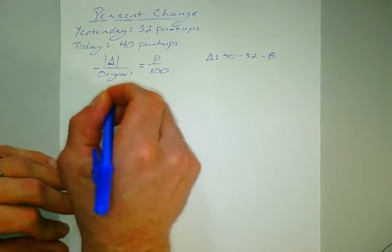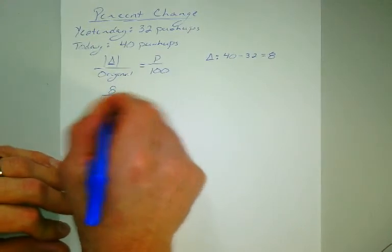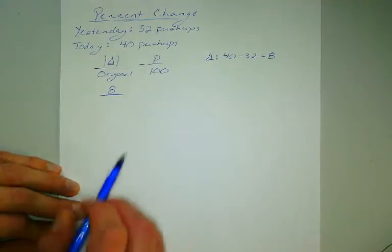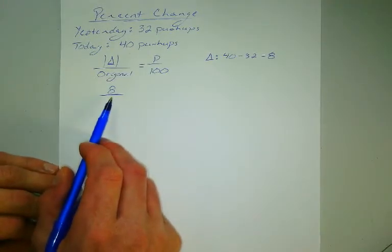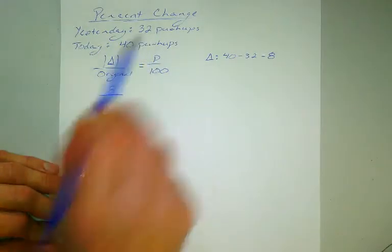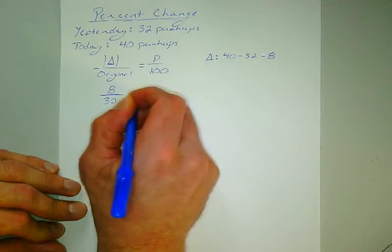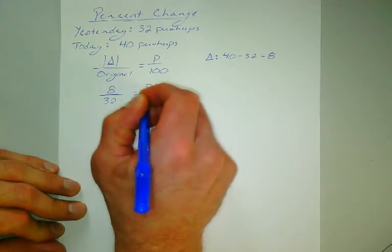So we're going to do 8 all over the original. Now this tripped some of you guys up the last couple weeks. The original is the initial value that I started with, which would be yesterday's push-ups. So I have 8 over 32 equals p all over 100.